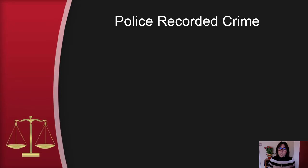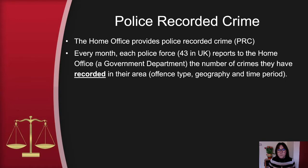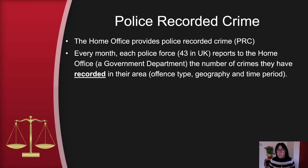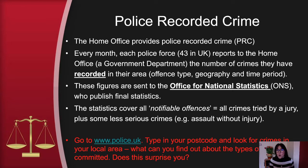Police recorded crime: the Home Office provides police recorded crime (PRC) every month. Each of the 43 police forces in the UK reports to the Home Office — a government department — the number of crimes they have recorded in that area: the offence type, the geography, and the time period. These figures are then sent to the Office for National Statistics (ONS), who publish the final statistics. The statistics cover all notifiable offences — all crimes tried by a jury plus some less serious crimes like assault without injury. You can see crimes in your area at www.police.uk by entering your postcode.